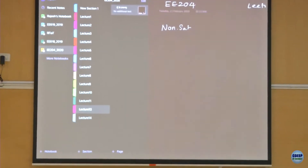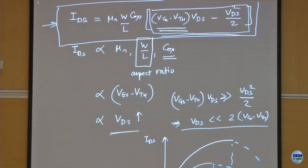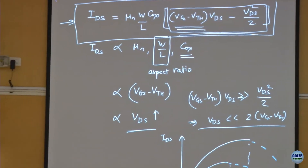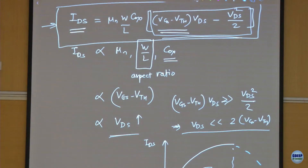Yesterday we talked about the equation for the non-saturation region of operation. We derived that IDS is proportional to mu_n times W over L times C_ox. This all makes sense: if mu_n mobility increases you should have more current, if width increases you should have more current, if length decreases you should have more current, and if capacitance increases you will have more influence on the channel so the current should increase.